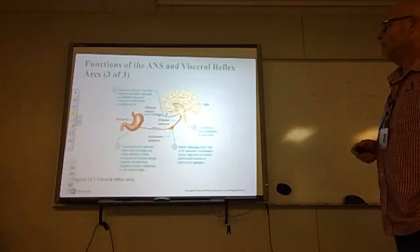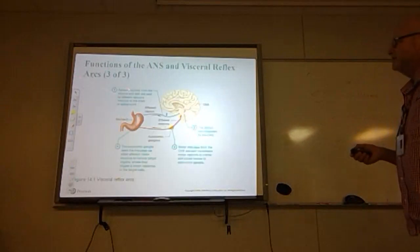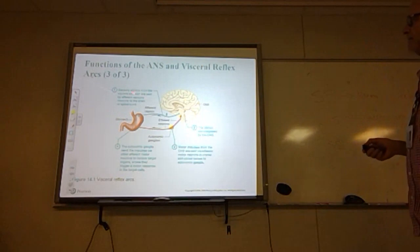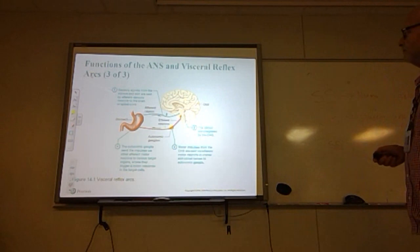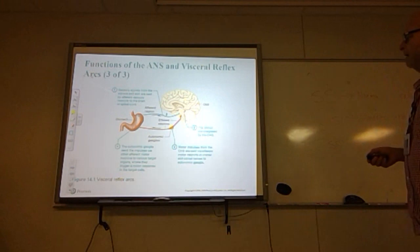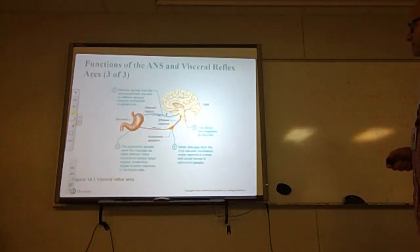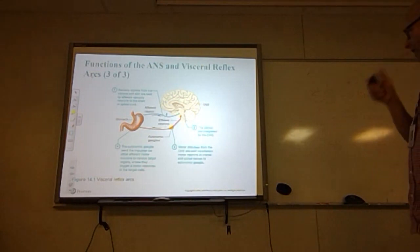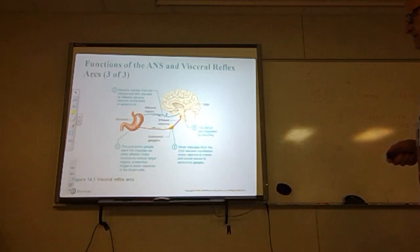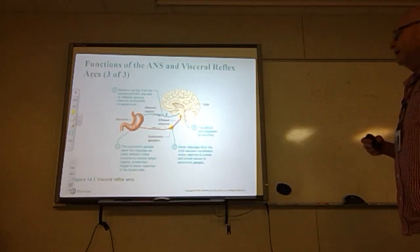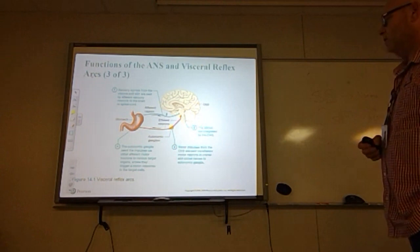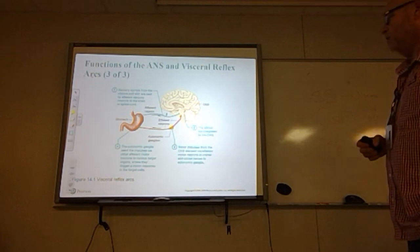To summarize the pathway: sensory signals from the viscera and skin are sent by afferent sensory neurons to the brain or spinal cord. The stimulus is integrated by the central nervous system. Motor impulses from the CNS are then sent by efferent neurons in the cranial and spinal nerves to the autonomic ganglion, which sends impulses via other efferent motor neurons to various target organs, triggering a motor response at the target cell.